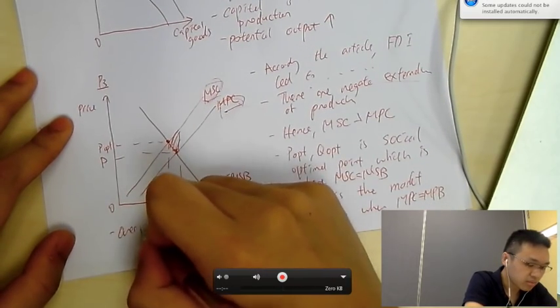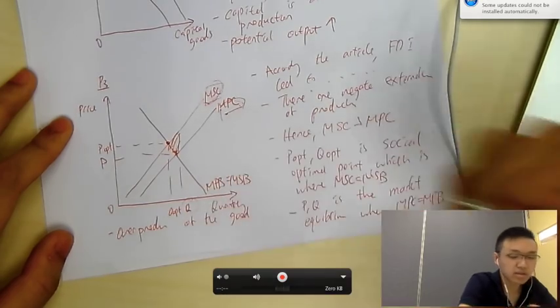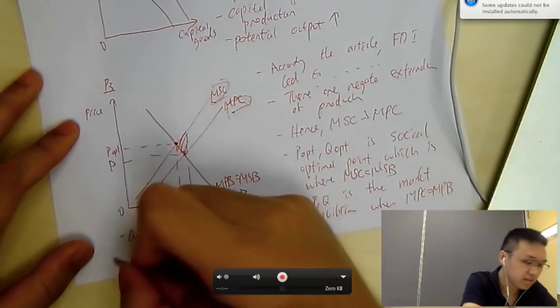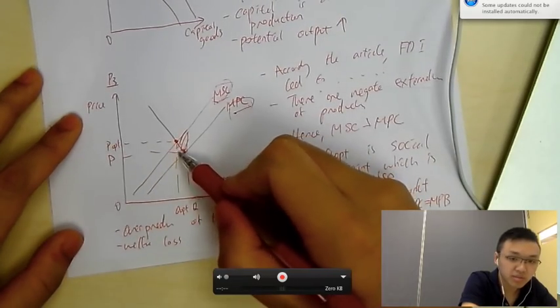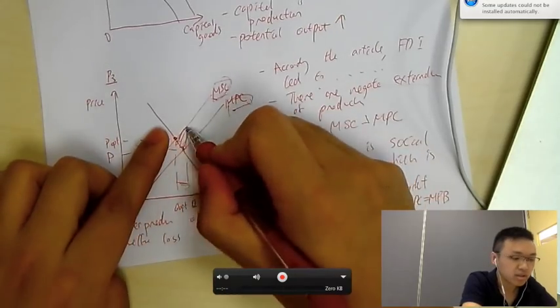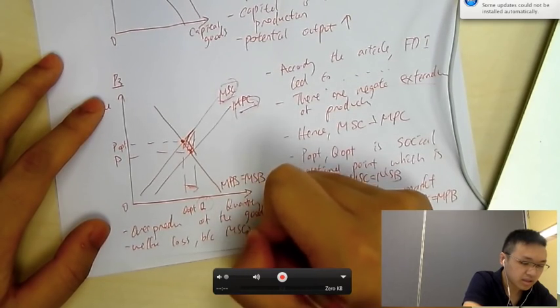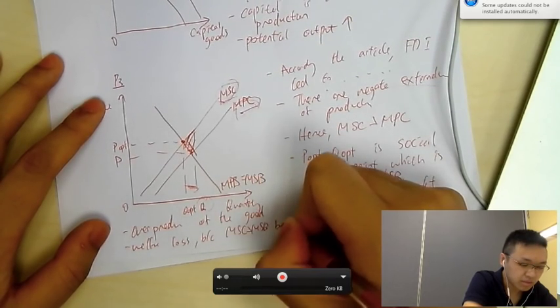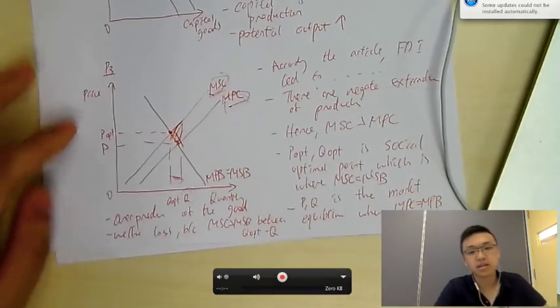So, you can say there's overproduction of the good. So, hence, this is a case of market failure. And you can say there's welfare loss. Why is there a welfare loss? Well, because this good is being overproduced. And for these overproduced quantities, the MSC exceeds the MSB, right? So, because MSC exceeds MSB between Qopt to Q. That's it.